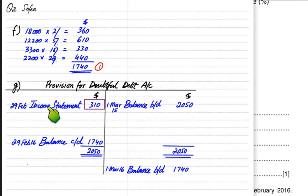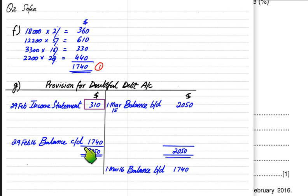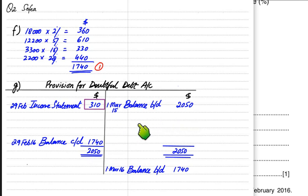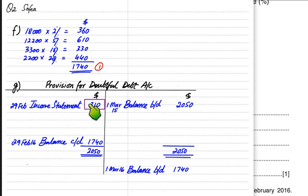The only thing that changes in a provision account: if the provision is increasing during the year, let's suppose from 2,050 it becomes 2,100, then provision increases by 50. The income statement would come on the credit side with the amount of 50. If the provision is increasing, income statement comes on the credit side; if decreasing, income statement comes on the debit side. Whichever is the shorter side, that would be the income statement.